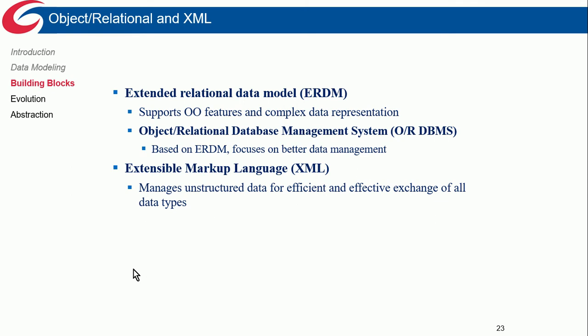There's also the extended relational model, which supports object-oriented features and complex data representation — a kind of happy medium between relational and OO. XML is another way to structure data — it's extensible and allows representing data in many different ways. XML can use schemas, and when it does, it becomes more like a database engine with rules that must be complied with. We won't talk much about XML in this course, but it's something you'd cover in a programming class.